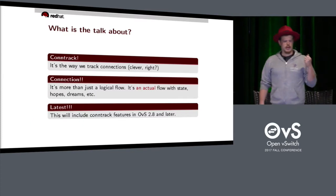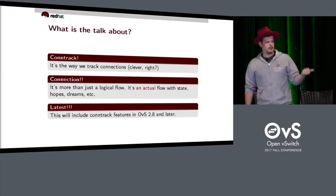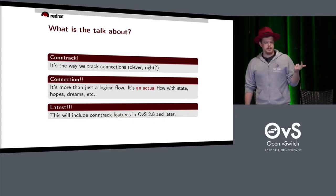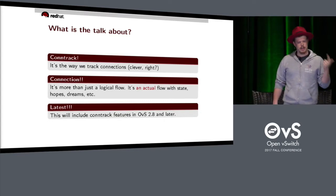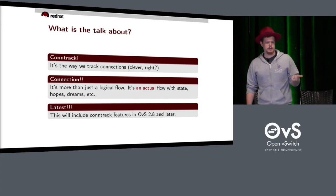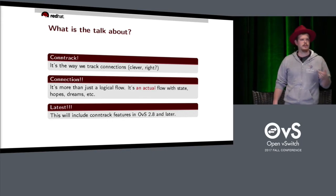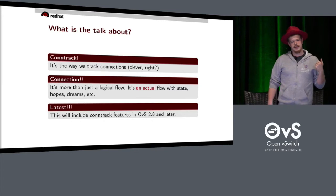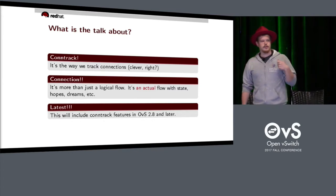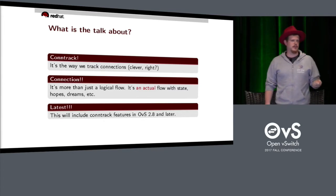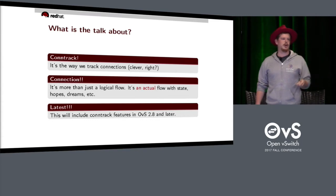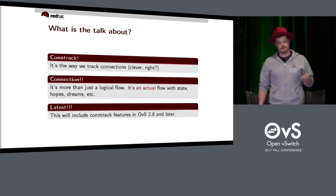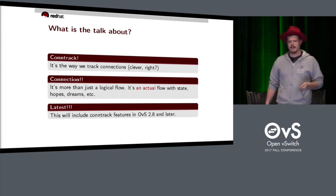This talk is about conntrack — how we track connections. It's about connections, which are more than just logical flows. They're actual flows. They have state. They have numbers. I base this talk by going through the code in master, so this will be bleeding edge.